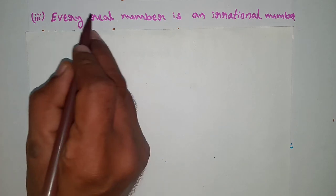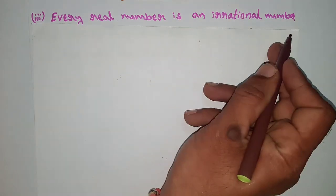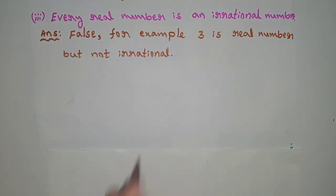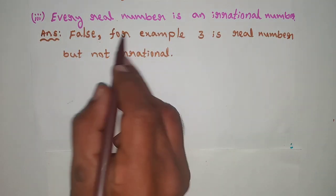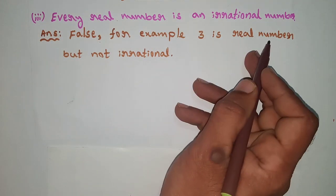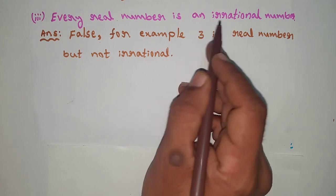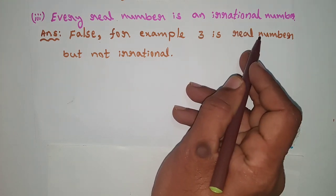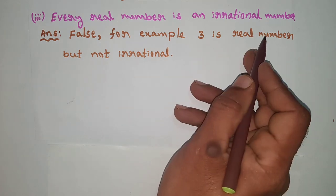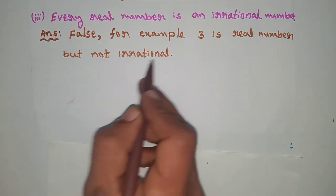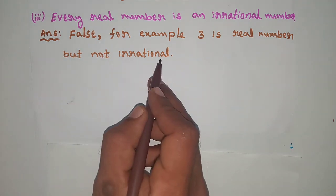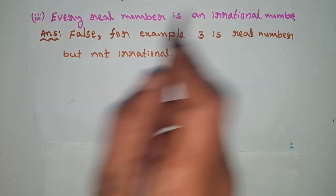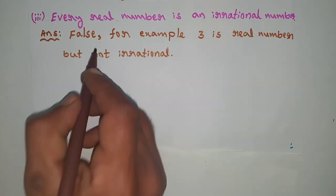Third statement: every real number is an irrational number. This statement is false. For example, 3 is a real number and 3 is a rational number. A rational number is a real number, so 3 is a real number but not an irrational number. Therefore, every real number is an irrational number is false.